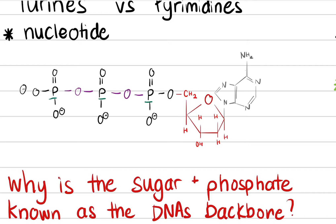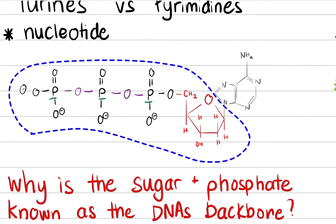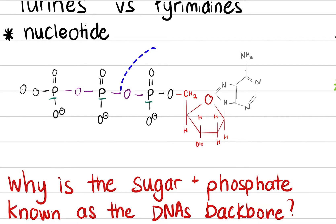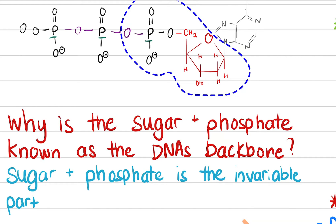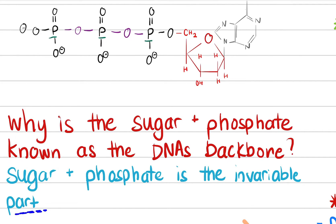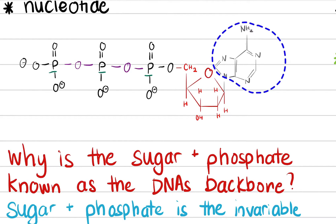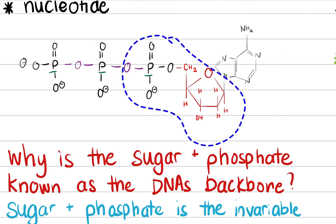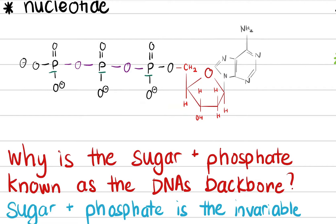Here comes the question — why is the sugar and the phosphate known as the backbone, the DNA backbone? This stuff right here is known as the backbone of DNA. When DNA is formed, we don't really use all three of the phosphates, we just use two of them. The pyrophosphate is used as an energy source. The answer is that the sugar and the phosphate is the invariable part of the structure. The only thing that's changing is the aromatic base — that is the variable part. So the backbone is the phosphate and the sugar, which is maintained throughout the chain.